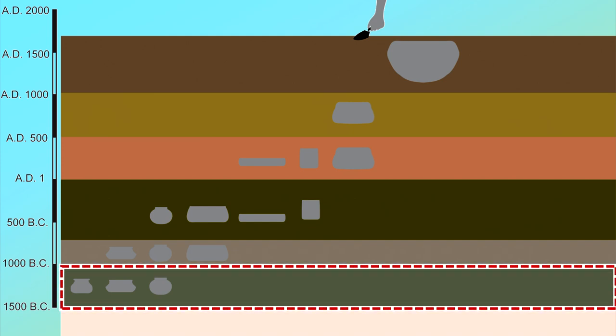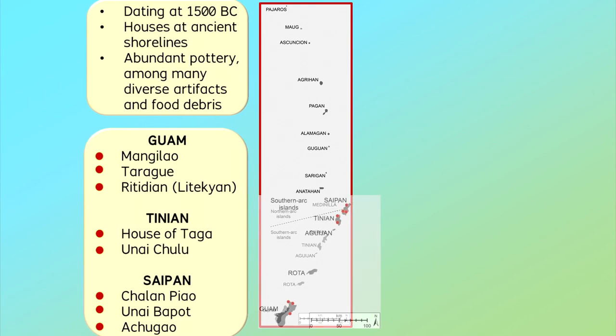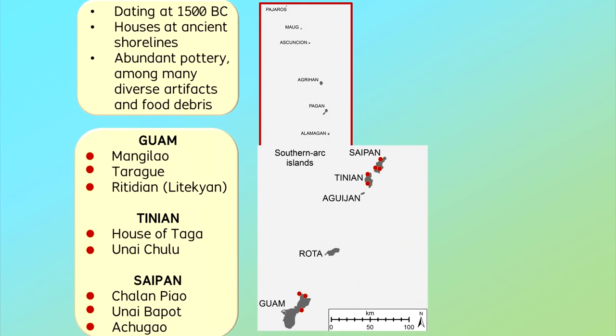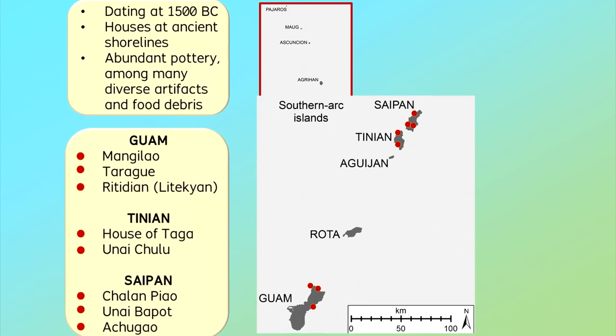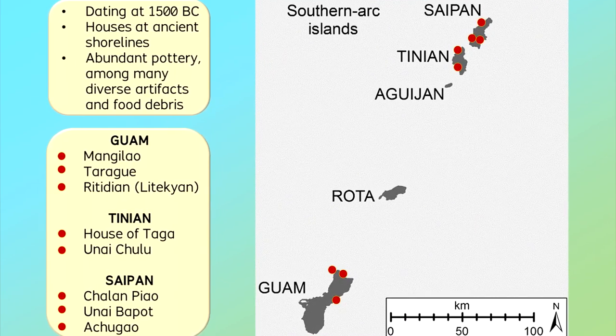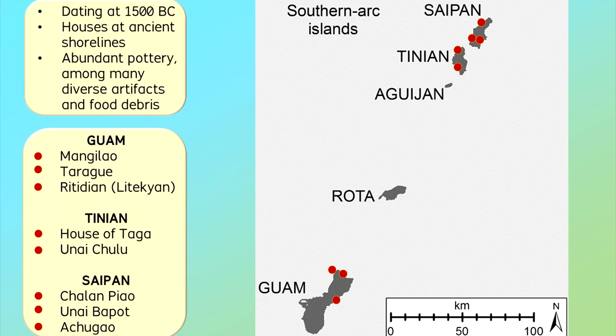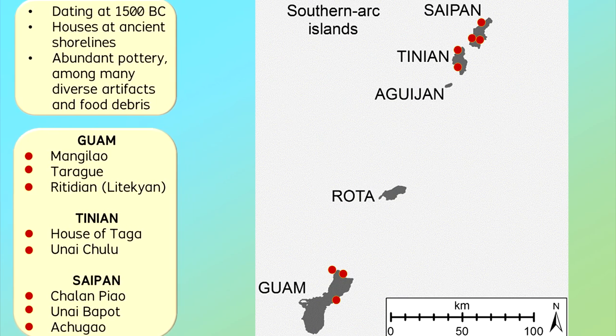So far in the Marianas, several sites on the separate islands of Guam, Tinian, and Saipan have revealed an abrupt pottery-bearing horizon, all consistently starting around 1500 BC. The abruptness reflects the sudden appearance of many people living in multiple places of the Mariana Islands all at once.